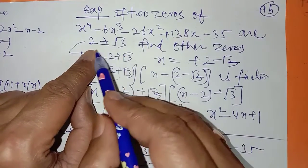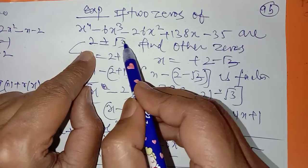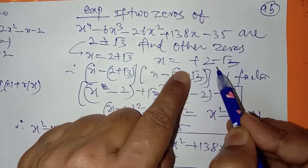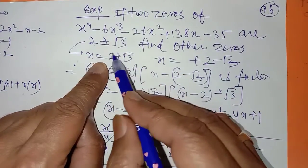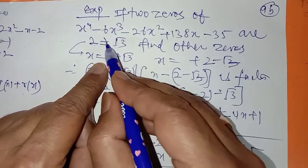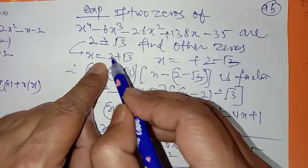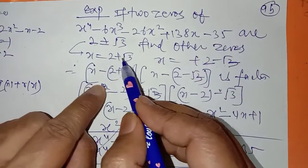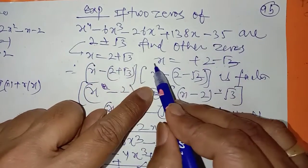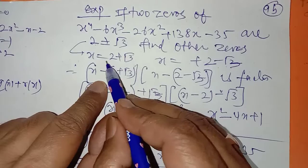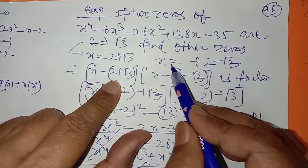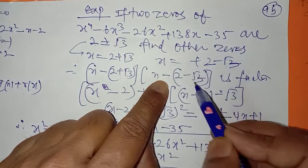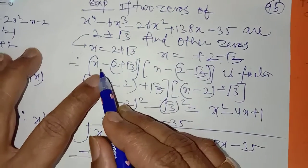دیکھیں دھیان سے — دو zeros ہیں: 2 plus root 3 اور 2 minus root 3۔ جیسے میں نے بتایا تھا، x is equal to رکھو پہلا والا، x is equal to رکھو دوسرا والا۔ یہ left میں آکے minus ہو جاتا ہے، تو bracket میں minus 2 plus root 3 اور minus 2 minus root 3 آ جاتا ہے۔ یہاں پر a plus b اور a minus b کا formula بن رہا ہے۔